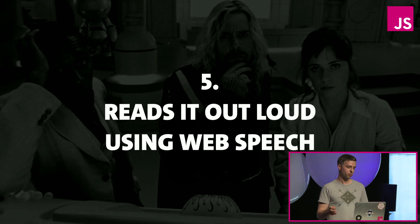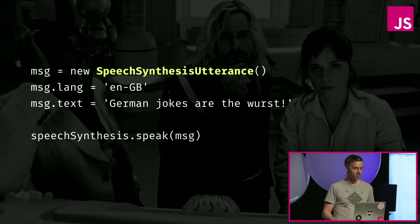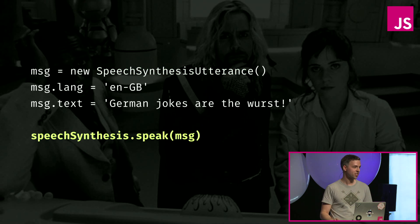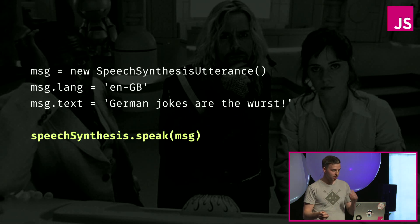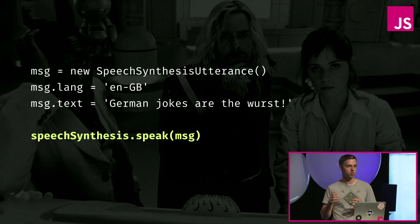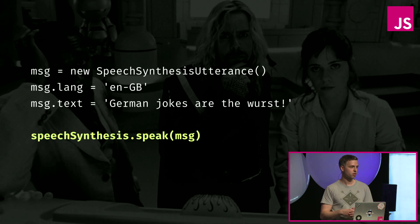The last step: we already have the original and translated transcript on the other side, and now it's time to read it out loud. We use the Web Speech Synthesis API for that. You instantiate a strange object, set the language, set the message itself, and then call the speak method passing that object. As you can hopefully see, the individual steps are really simple. In the real application there's a bit more code for error handling and language switching, but that's the core of it.